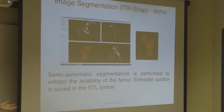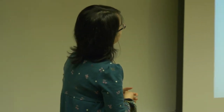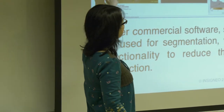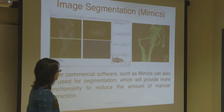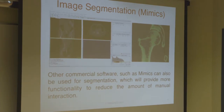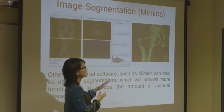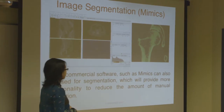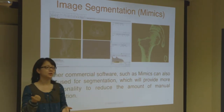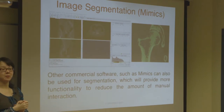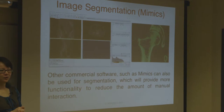This is a screenshot of Mimics, showing a very similar setup. Because you pay a premium for that licence, you get additional features like filtering, thresholding, and more sophisticated functionalities. For example, you can create a thresholding for cortical bone first, then do your trabecular bone and combine them together in Mimics. ITK Snap doesn't really have that function at the moment.